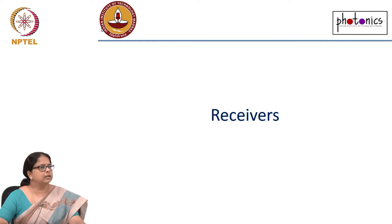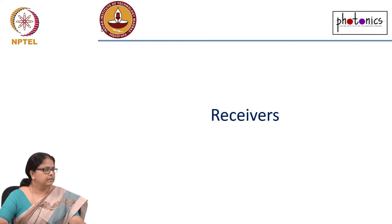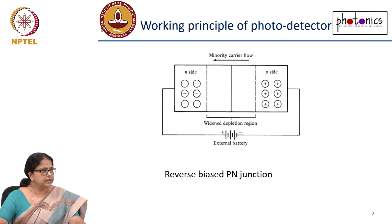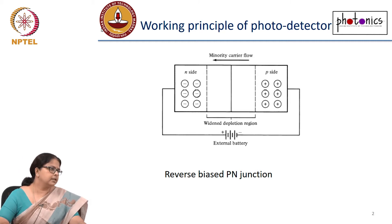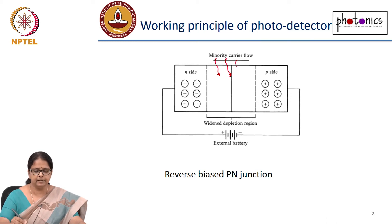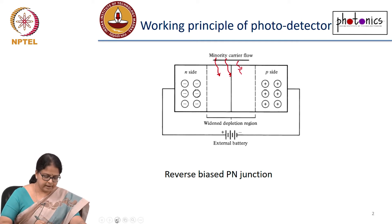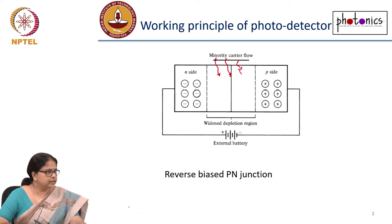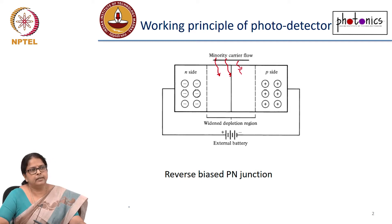When we talked about semiconductor lasers, we already discussed the working principle of receivers. We are going to use a p-n junction again. We reverse bias the p-n junction, and when light falls in the junction region, it creates electron-hole pairs. These are minority carriers that are created, and because the junction is reverse biased, they cross the junction and generate a current. That is how detection happens.